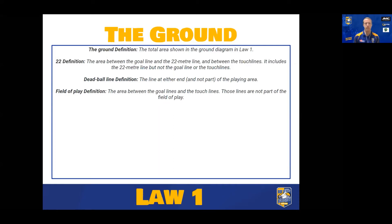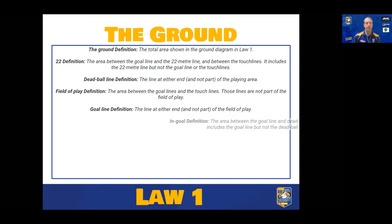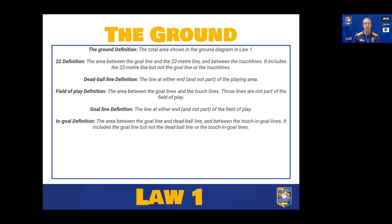There are a lot of ramifications for where rucks, mauls and tackles can take place. The goal line is at either end of the field of play and is not part of the field of play. The end goal is the area between the goal line and the dead ball line, between the touch and goal lines — it includes the goal line but not the dead ball or touch and goal lines. Up until very recently it also included the post padding, but that's since been removed as a law amendment.